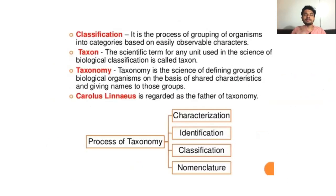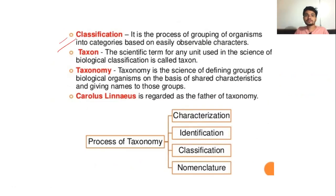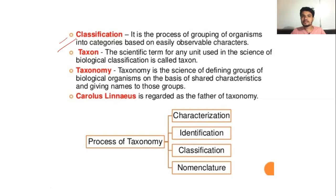In this lecture we are going to discuss about classification. Why do we require classification? Because there are millions of species found and known on this earth. To study such a vast number of species, we must classify them into certain groups to study them properly. If we don't classify them and try to study each one individually, it cannot be possible. So for study purpose and for our convenience, we classify them into certain groups, and that process is known as classification.